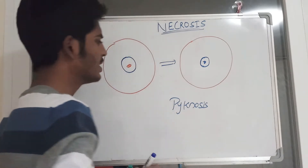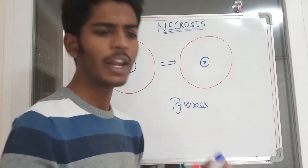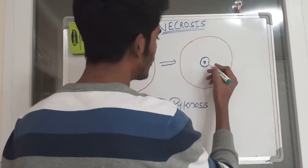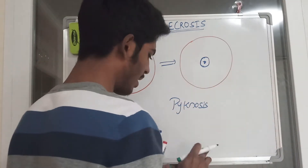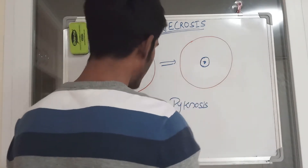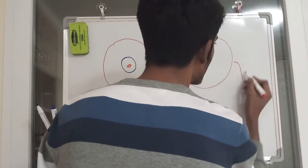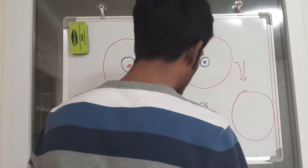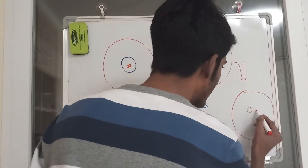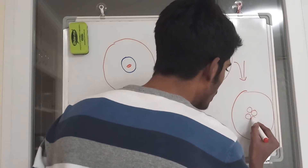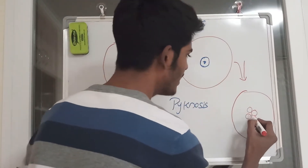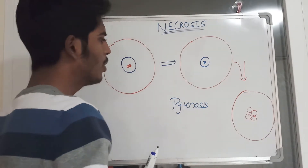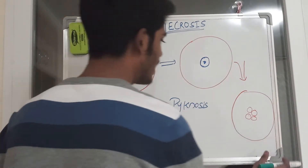After pycnosis there is a process called karyorrhexis. What happens during karyorrhexis? The shrunken nucleus undergoes fragmentation, but it remains within the center of the cell. In karyorrhexis the cell shows fragments of the nucleus — the nuclear material is present within the cell but it is not completely intact.